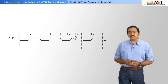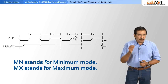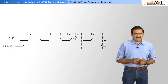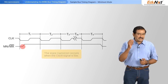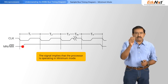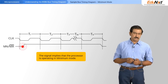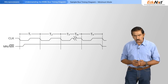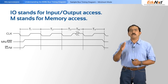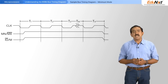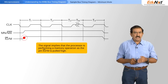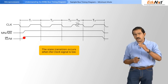Let us start with understanding the MIN/MAX bar waveform. The MIN/MAX bar tells you whether the processor is operating at minimum mode or maximum mode. In this example, the MIN/MAX bar transition occurs when the clock signal is low, and since it is going to stay at high, it implies that the processor is in the minimum mode. If it was operating in the maximum mode, this signal would be at low. Then there is something called IO bar slash M — IO is an input/output access, M stands for memory access. In this case, IO bar being pulled high tells you that it is a memory operation, and again the state transition occurs when the clock signal is low.